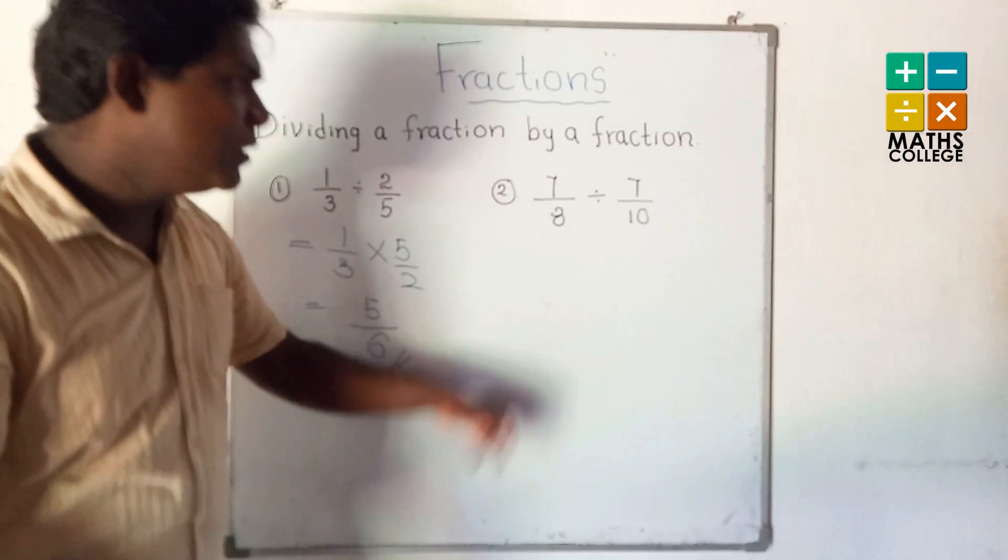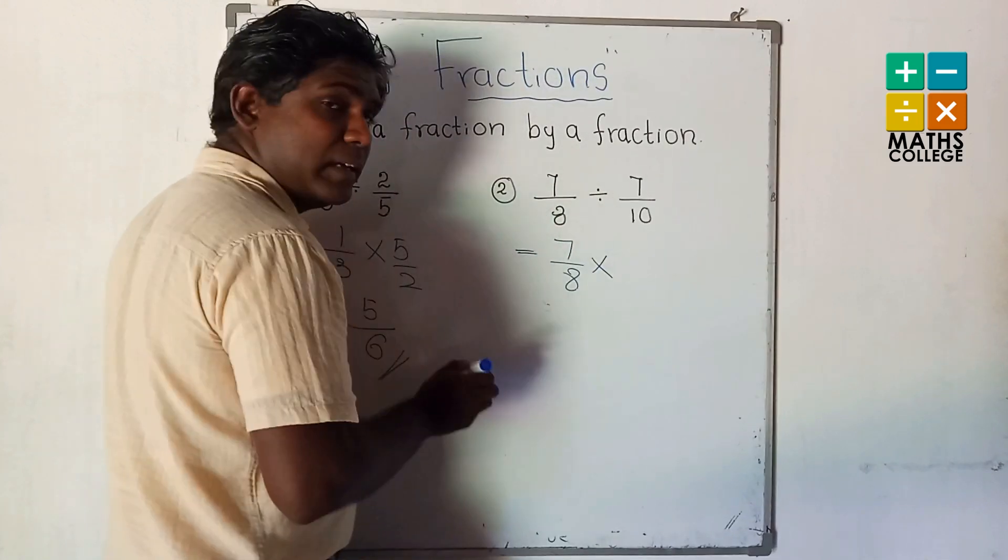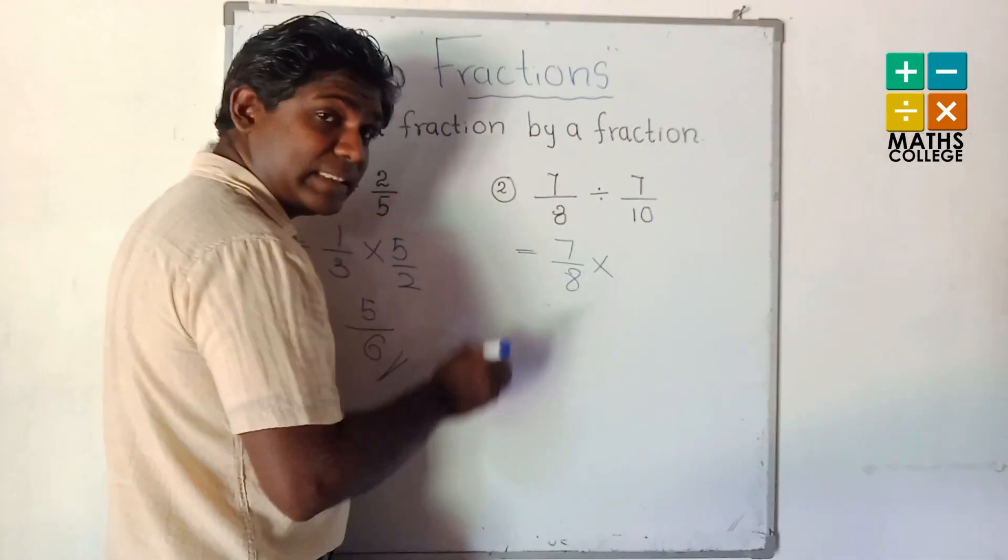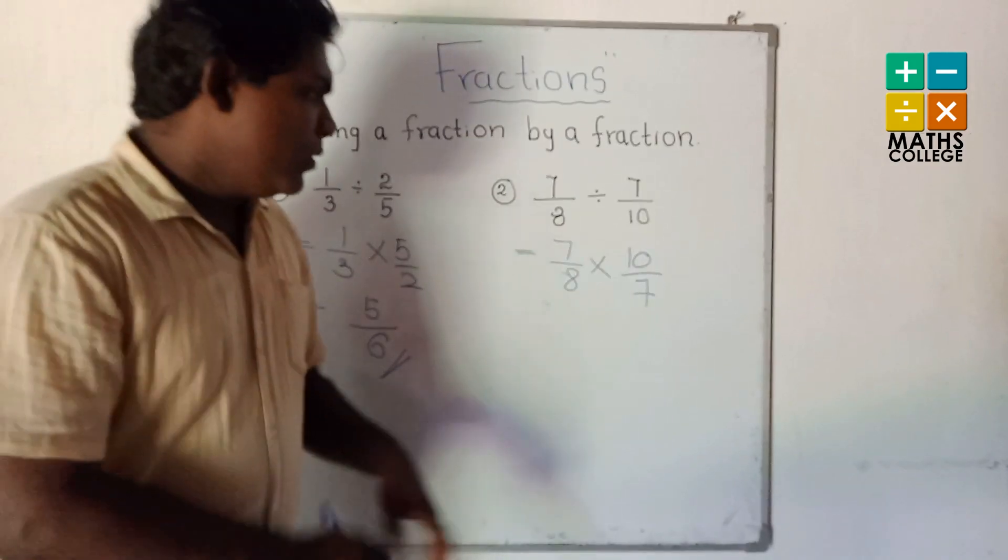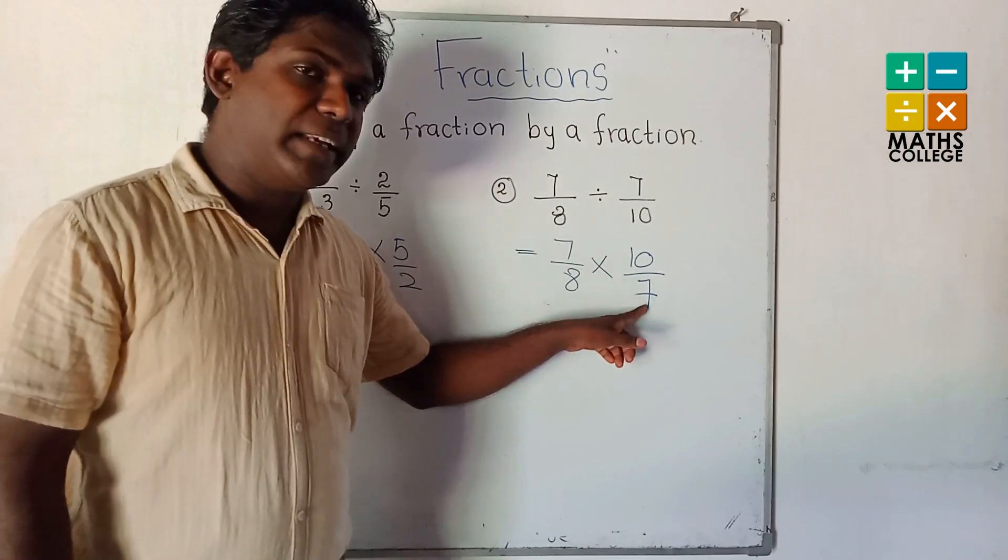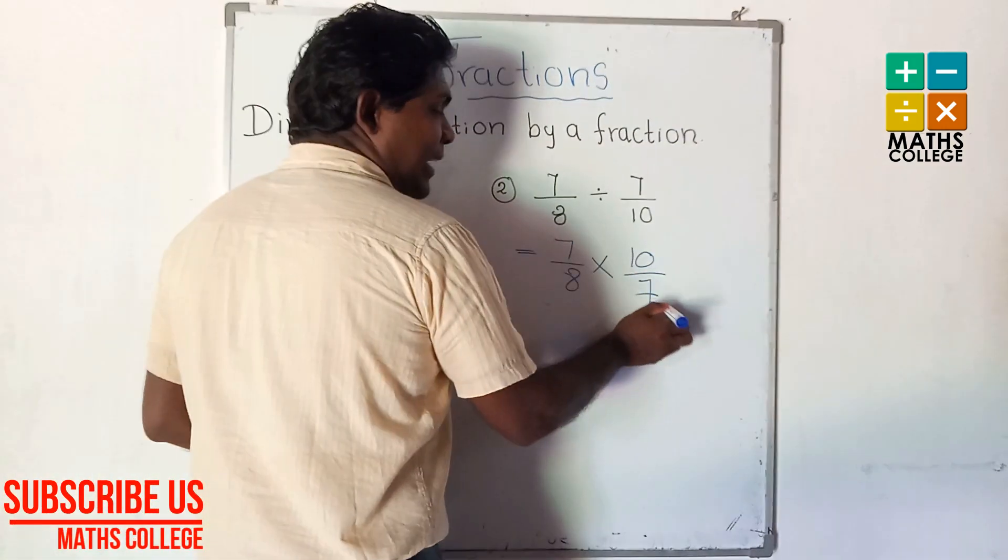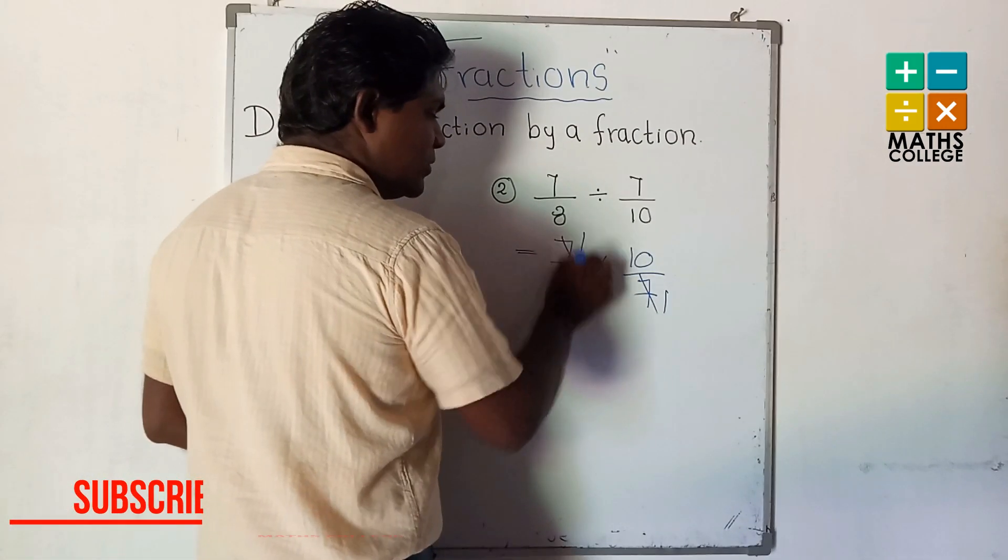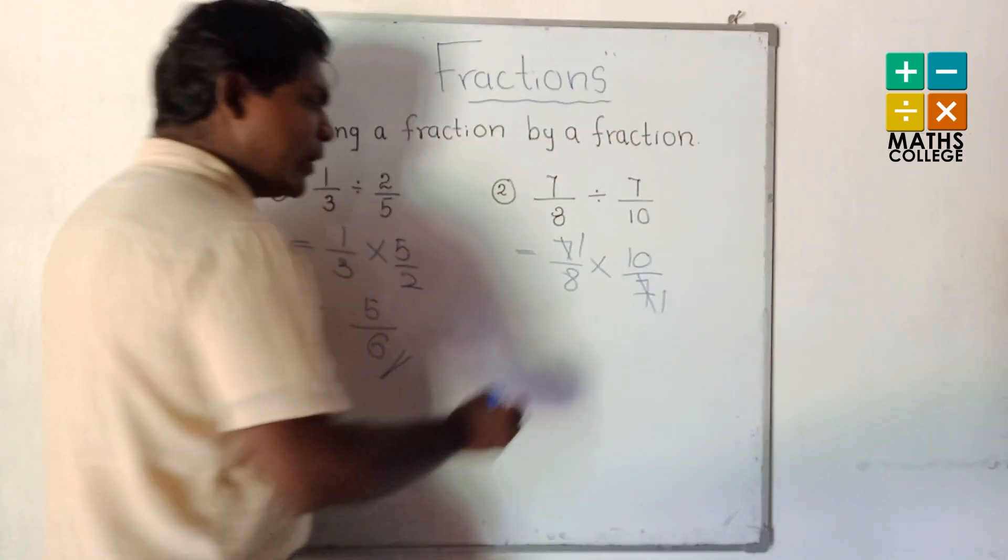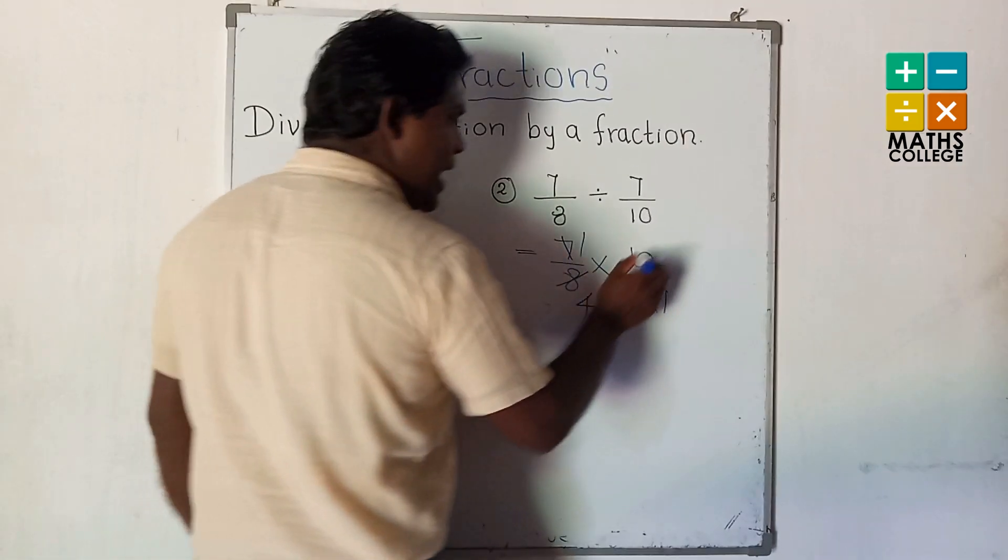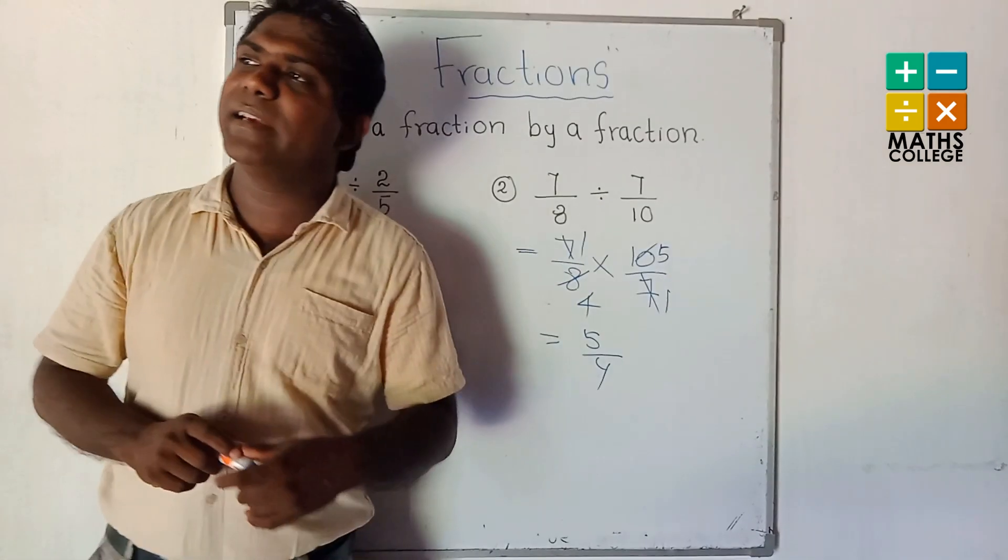Second example: 7 upon 8 multiply the dividing fraction as reciprocal, 10 upon 7. Now I check numerators and denominators. 7 and 7 have common factor, I will cancel by 7, getting 1 for each. 10 and 8, the common factor is 2. Cancel by 2, this side 5, that side 4. The answer is 5 upon 4.